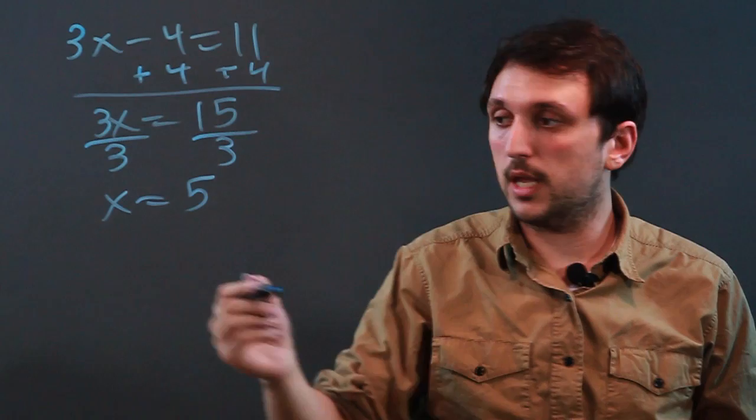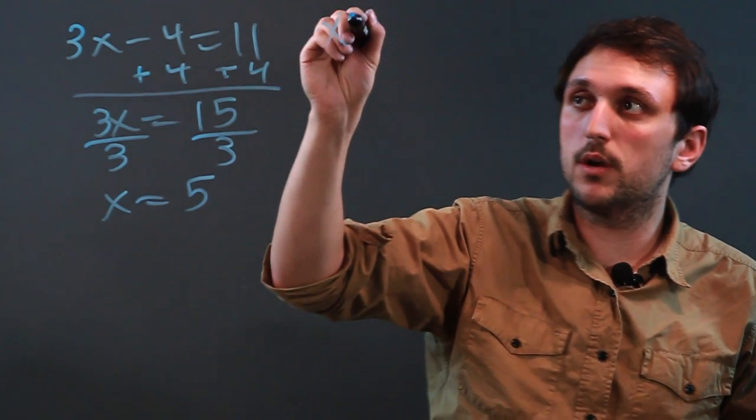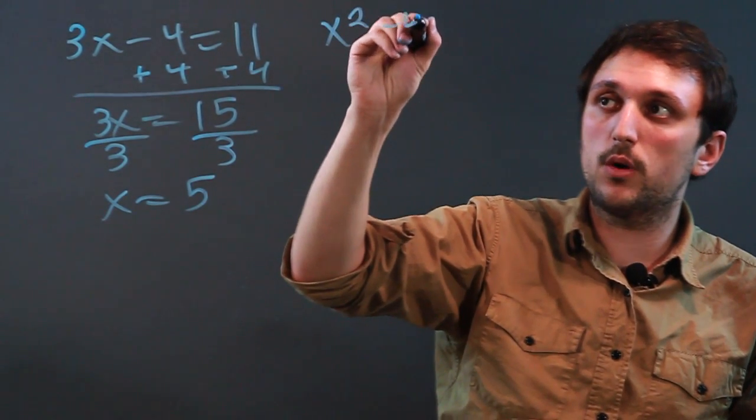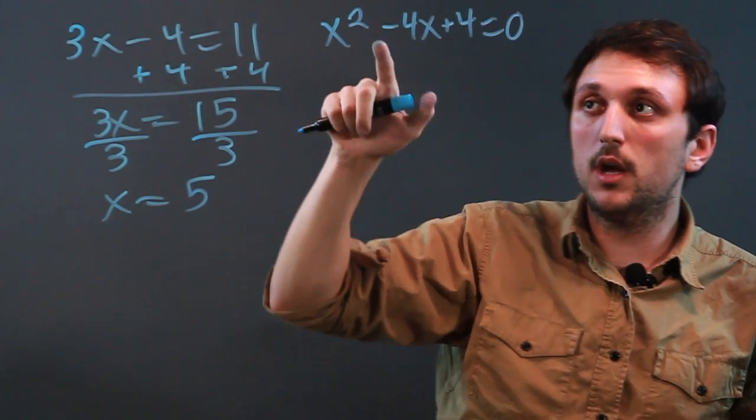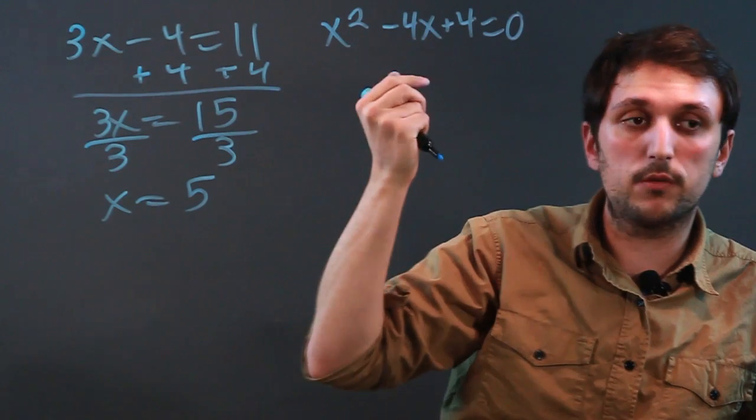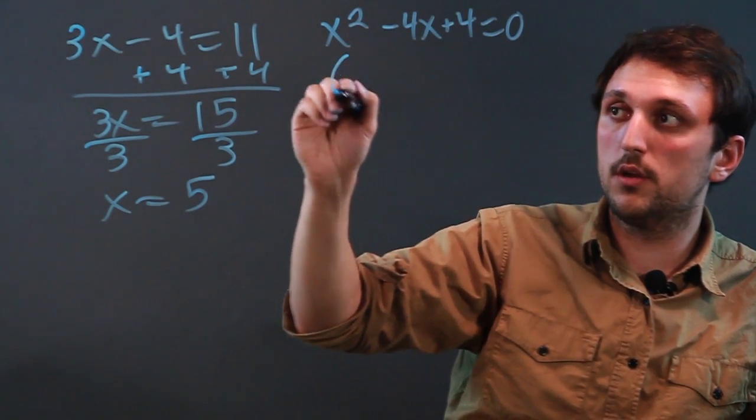Now we can have something a little more complicated. Let's say we have x squared minus 4x plus 4 equals 0. Now in this case, getting all the numbers to one side really won't help us. So we have to do what's called foiling to factor.